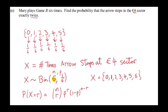X follows a binomial distribution because we have six Bernoulli trials. Each trial is a spin of the arrow. The probability that the arrow stops at the four euro sector is one sixth, and the probability that it does not is five sixths. So we have six Bernoulli trials with probability of success equal to one sixth — those are our two parameters.